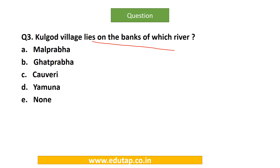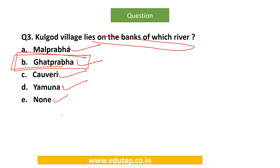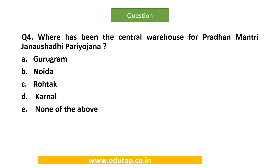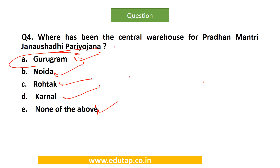MCQ: Kulgore village lies on the banks of which river — Malaprabha, Ghadprabha, Kaveri, Yamuna, or none of these? The correct answer is Ghadprabha. You can remember it as 'Ghadprabha ke ghadpar.' Kulgore village is in Karnataka, falls in Belgavi district, and has been ranked as the best and most developed Indian village under the central government's Antodaya scheme. Next question: Where has the central warehouse for Pradhan Mantri Jan Aushadi Pariyojana been set up — Gurugram, Noida, Rohtak, or Karnal? The correct answer is Gurugram — Bilaspur in Gurugram, the new name of Gurgaon.